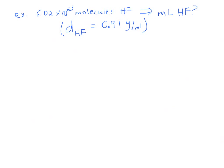Here is your last example problem. If you have 6.02 times 10 to the 23rd molecules of HF, how many milliliters of HF do you have? The density of HF is 0.97 grams per milliliter. You're trying to go from molecules to milliliters, and at some point you'll want to use that density. Pause and try to work through this on your own — start with 6.02 times 10 to the 23rd.